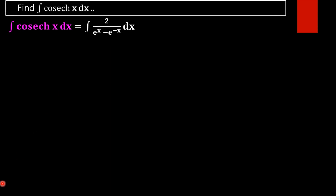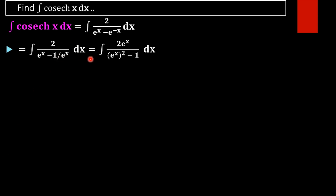Next we rewrite e^(−x) as 1/e^x. Taking LCM we get e^x squared minus 1 in the numerator, divided by e^x in the denominator. That e^x turns to the numerator, giving us 2e^x divided by (e^x squared minus 1) dx.